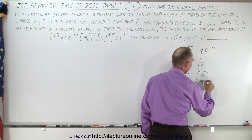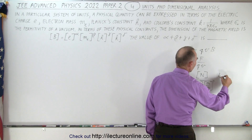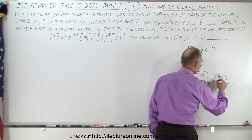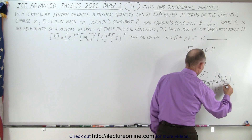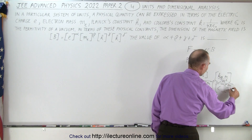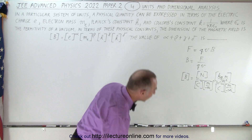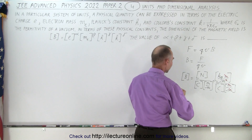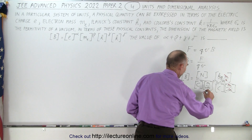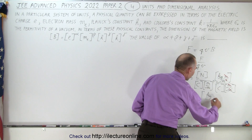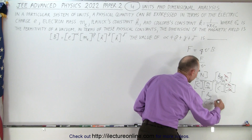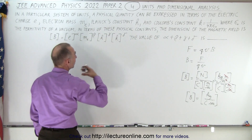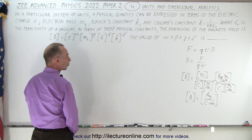Newtons can be written as kilograms meters per second squared — mass times acceleration — divided by coulombs, divided by meters per second. Simplifying: meters cancel out, one of the seconds cancels out, so the units for the magnetic field can be expressed as kilograms per coulombs times seconds. Those are the units for the magnetic field — kilograms per coulomb per second.